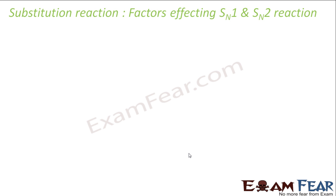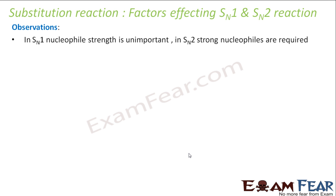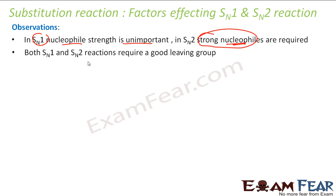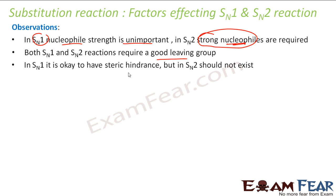We have seen SN1 and SN2 reactions. Let's understand which factors determine whether a reaction is SN1 or SN2. In SN1, the nucleophile is unimportant because the rate-determining step is when the leaving group leaves. But in SN2, a strong nucleophile is required. In both SN1 and SN2, a good leaving group is required. In SN1, it is okay to have steric hindrance because no back-side attack is needed, but in SN2, steric hindrance should not exist.